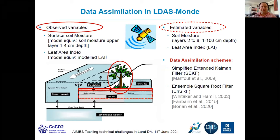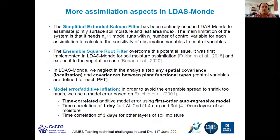Since this workshop is on data assimilation, I will provide more information on that. What we tend to observe in LDASMON are surface soil moisture and leaf area index, and what we want to estimate is the soil moisture in the first meter of soil and the leaf area index. We use different data assimilation schemes: routinely the simplified extended Kalman filter (SEKF), and in recent years we've also developed an ensemble square root filter. The main limitation of the SEKF is that it needs N+1 model runs — where N is the number of control variables — for each assimilation step.